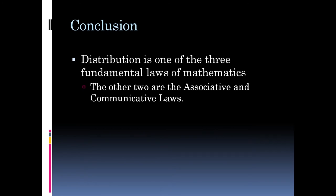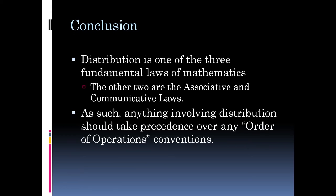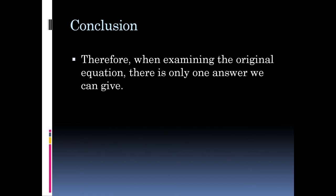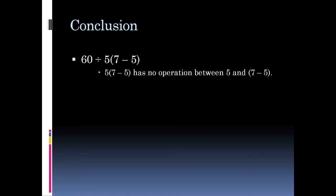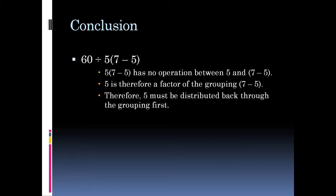Distribution is one of the three fundamental laws of mathematics — the other two are the associative and commutative laws. As such, anything involving distribution should take precedence over any order of operations conventions. Laws take precedence over conventions. Therefore, for the original equation 60 divided by 5 parentheses 7 minus 5, the 5 is a factor of the grouping 7 minus 5, so 5 must be distributed back through the grouping first. That gives 60 divided by 35 minus 25, which is 60 divided by 10. The answer is 6.